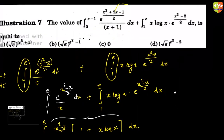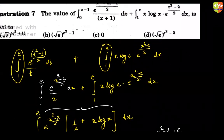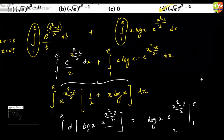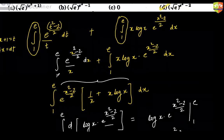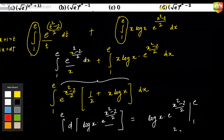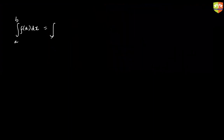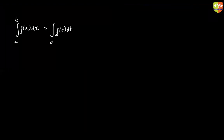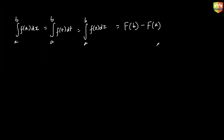Putting the limits: at x = e, you get ln(e)·e^(e²−2)/2 = 1·e^(e²−2)/2. At x = 1, ln(1) = 0, so that term vanishes. The answer is e^(e²−2)/2, which is the same as √e raised to (e²−2) — matching option D. A key learning: there is nothing in the name of the variable used; integration of f(x) from a to b equals integration of f(t)dt from a to b.